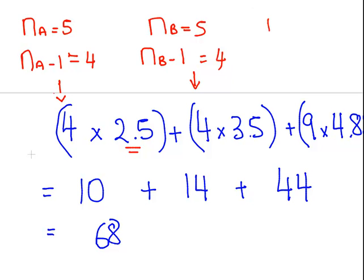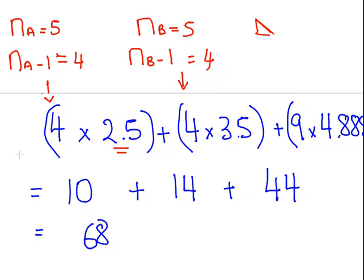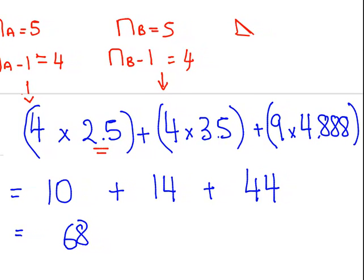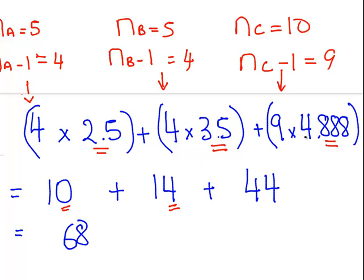So N_C is equal to 10. N_C minus 1 is equal to 9. So that's the sample size for 9 times the variance. Now we worked out these variances in the last presentation. So it's essentially the standard deviations squared. And the standard deviations are what you were given in the question. So 4 times 2.5 gives us 10. 4 times 3.5 gives us 14. 9 times 4.888 gives us 44. Allowing for a bit of rounding error. If you have a number like that and everything else seems to be working out as an integer, just round it up as an integer. And so there, add them all up and we get an answer of 68. So that is 68 accounted for.